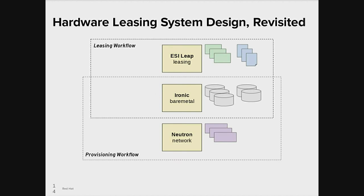Let's take one more look at the service architecture of our hardware leasing system, and hopefully you have a clearer picture of how all the pieces interact. One thing I really want to emphasize is how disconnected our leasing and provisioning workflows are. Maybe you don't need the concept of lessees, or maybe you're fine with owners assigning lessees themselves. You can do whatever you want there, and still take advantage of all our work in the provisioning space with Ironic node multi-tenancy and simplified CLI commands.